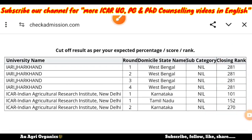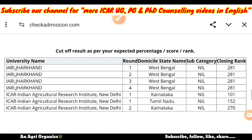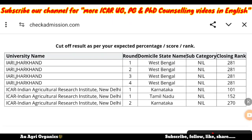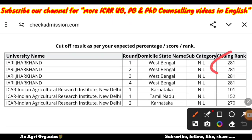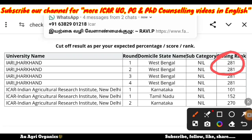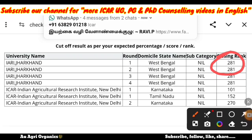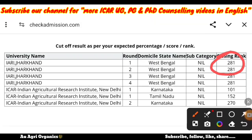IARI means those who got 281st rank in Plant Science got that campus. Most students attending Plant Science aim for subjects like Breeding or Plant Pathology, so interest in Microbiology is less. If you are aiming for Microbiology and getting a lower rank, there is still a chance to get a seat.